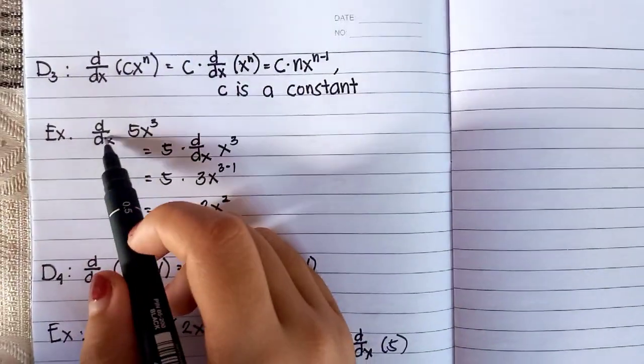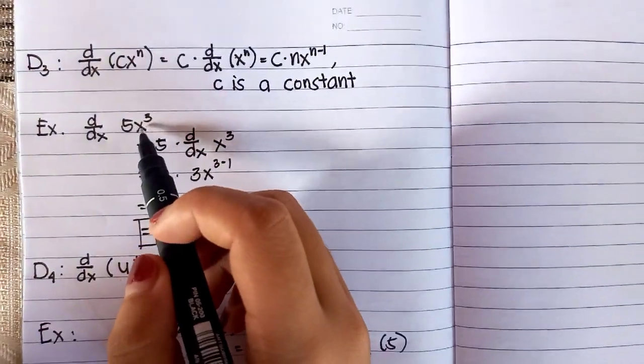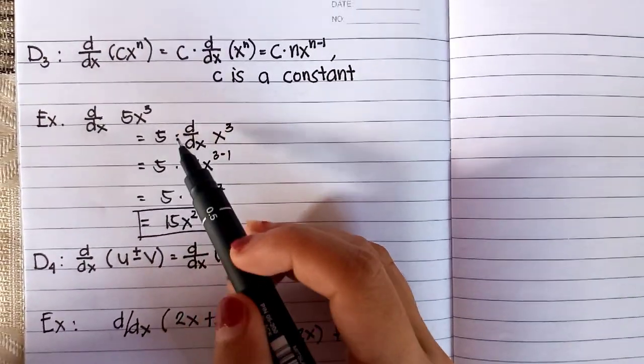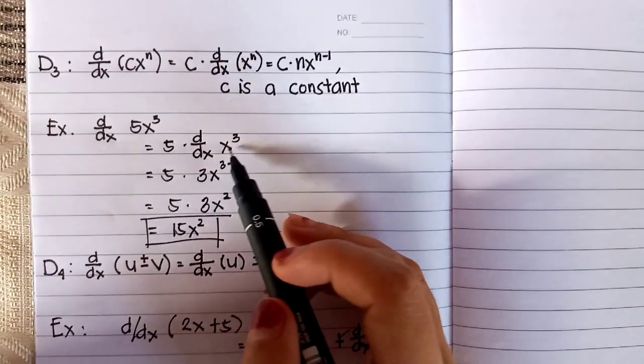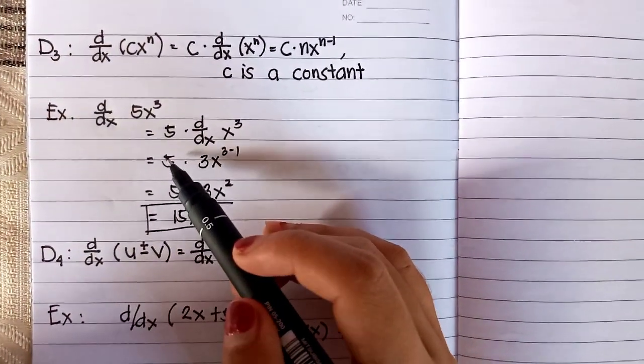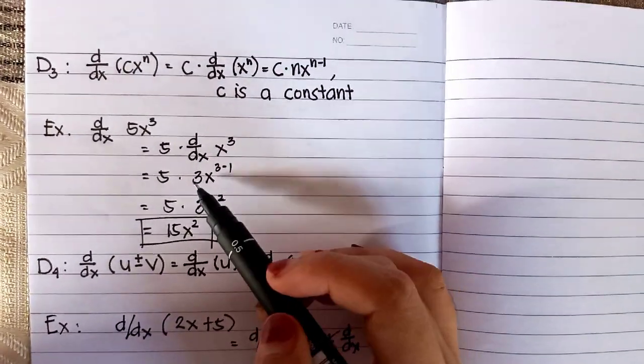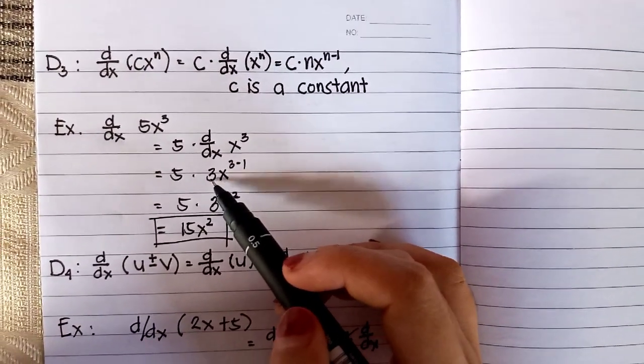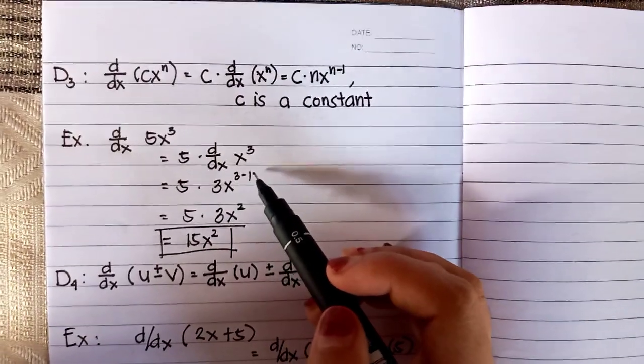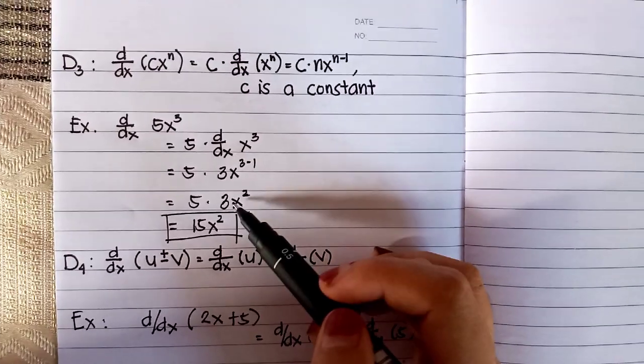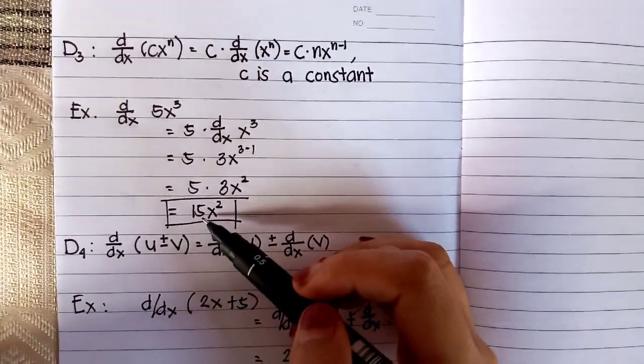For example, d/dx of 5X raised to 3, where 5 is C, the constant, times d/dx of X raised to 3 equals 5 times 3X raised to 2. The final answer will be 15X squared.